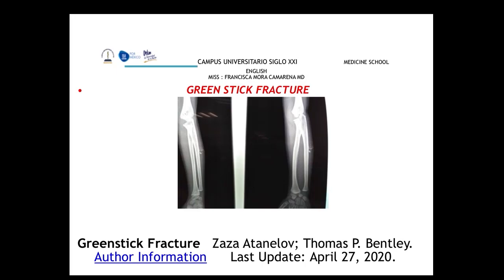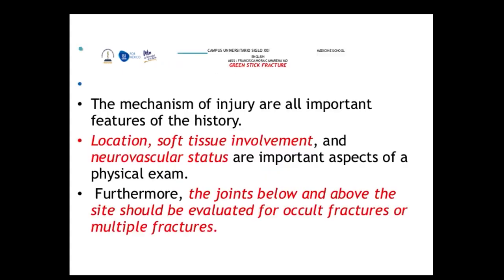Our next topic is the greenstick fracture. These fractures are very important because they are most commonly present in the pediatric age. When evaluating these fractures, we must ask about the mechanism of injury and consider the location of the fracture, soft tissue involvement, neurovascular status, and evaluate joints above and below the fracture site to look for any occult or multiple fractures.